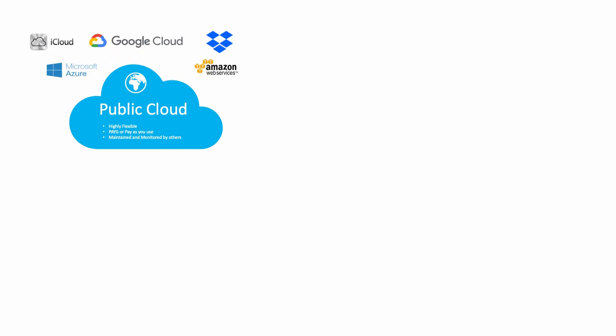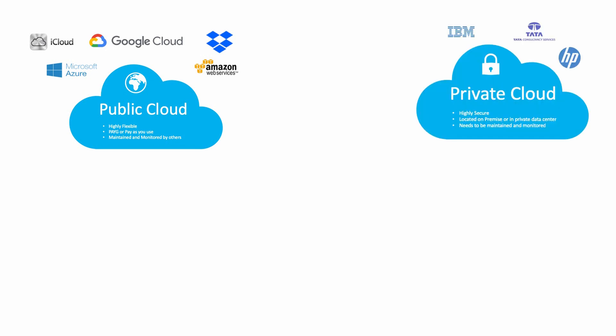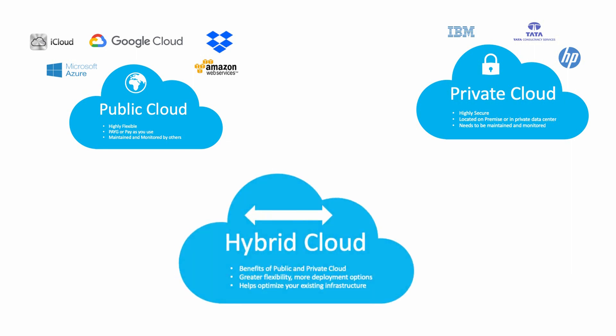We also have deployment models in cloud: private cloud, public cloud, and hybrid cloud. Public cloud is easily accessible via the internet at a lower price — examples include AWS, Azure, and Google Cloud. Private cloud provides a firewall and direct control of applications for individuals or organizations — examples include IBM, HP, Wipro, TCS, and Amazon. Hybrid cloud combines different data centers along with public and private cloud.